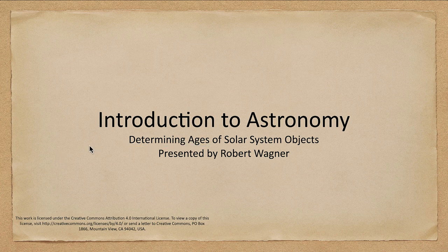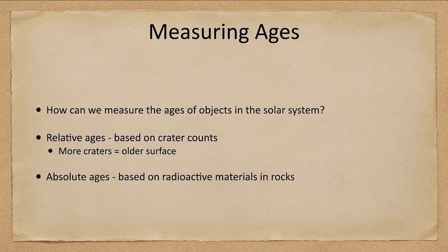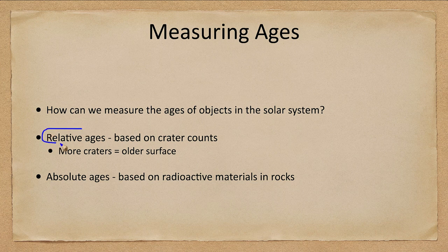So how do we measure ages? That's a good question. How can we figure out how old something is? Well, there are two methods we're going to look at. One is a relative age, which is based on crater counts and overlapping objects.